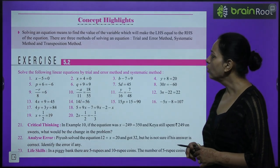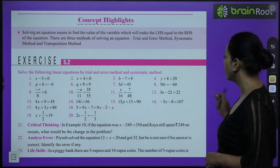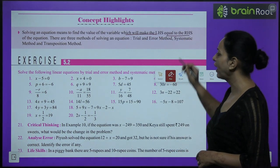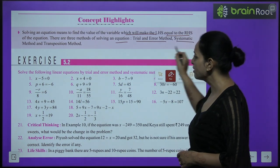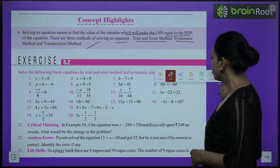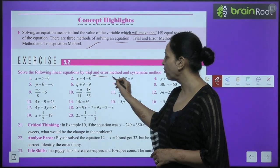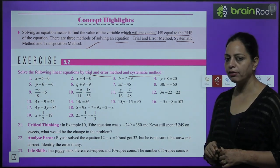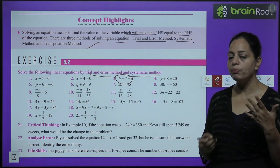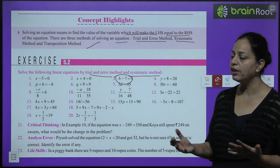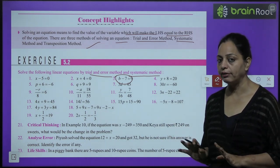Concept highlight: Solving an equation means finding the value of the variable that makes LHS equal to RHS. There are 3 methods: trial and error, systematic, and transposition. Exercise 5.2 asks you to solve linear equations by trial and error and systematic methods. Use whichever method is specified in the exam. For example, b minus 7 equals 9: add 7 to both sides, giving b equals 16.